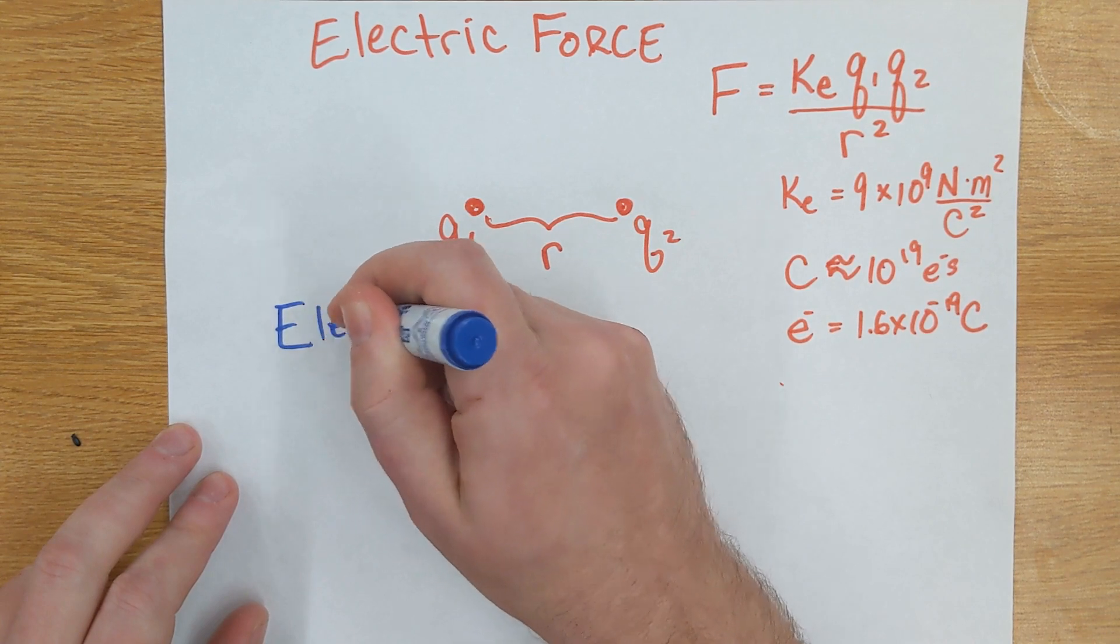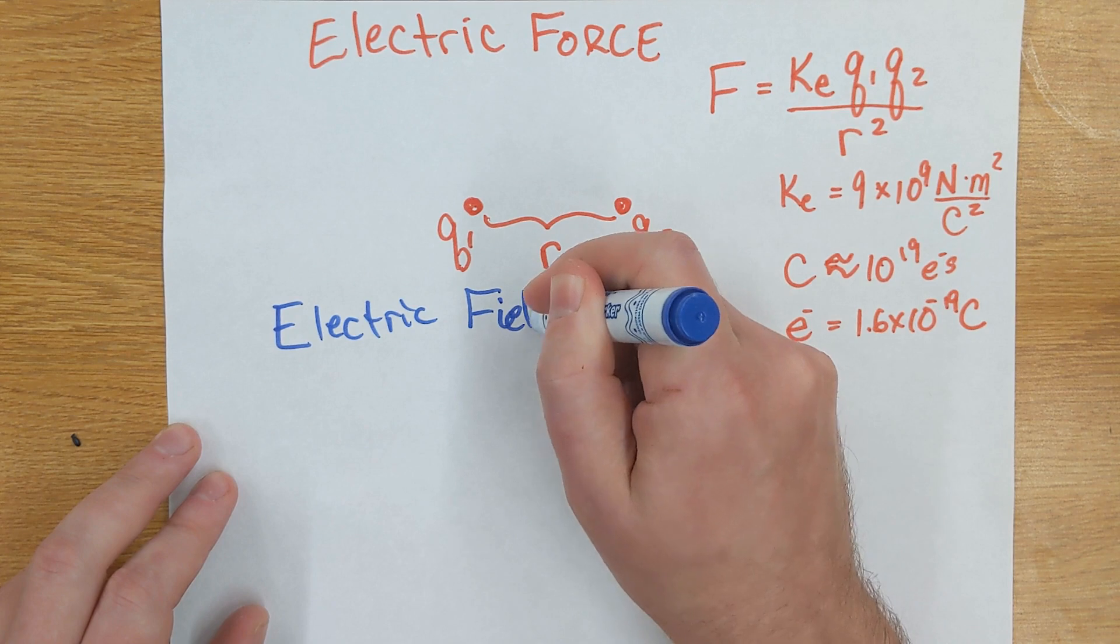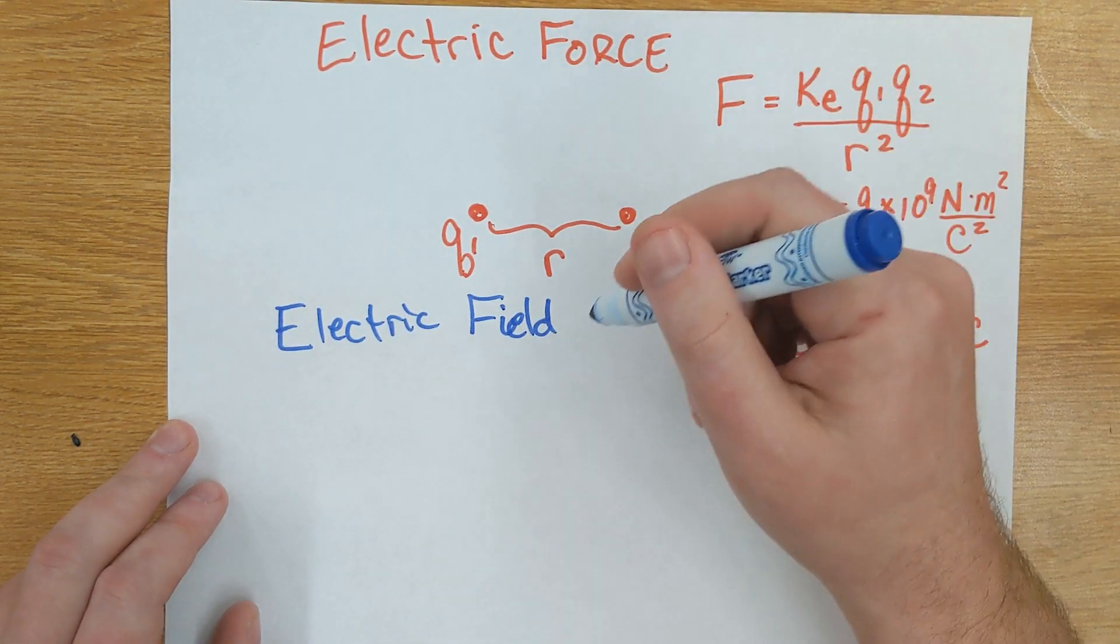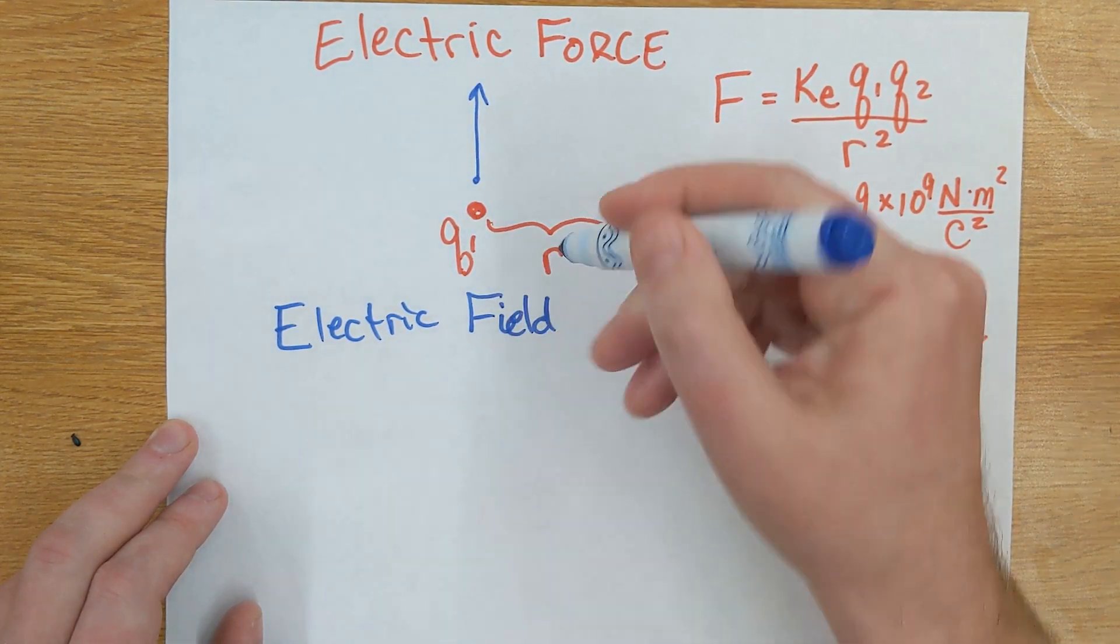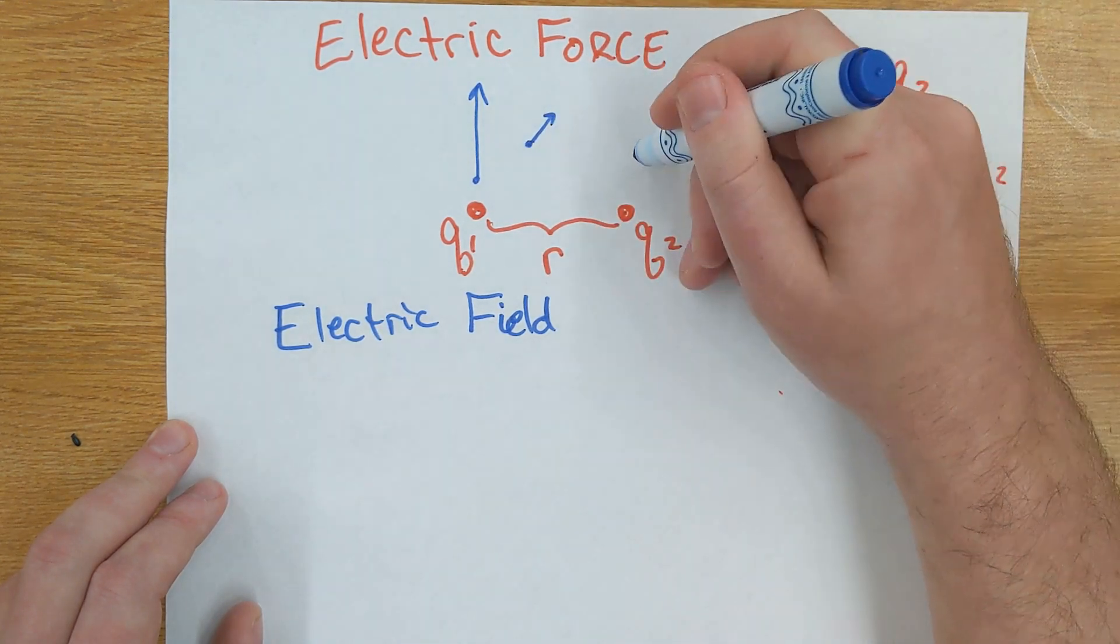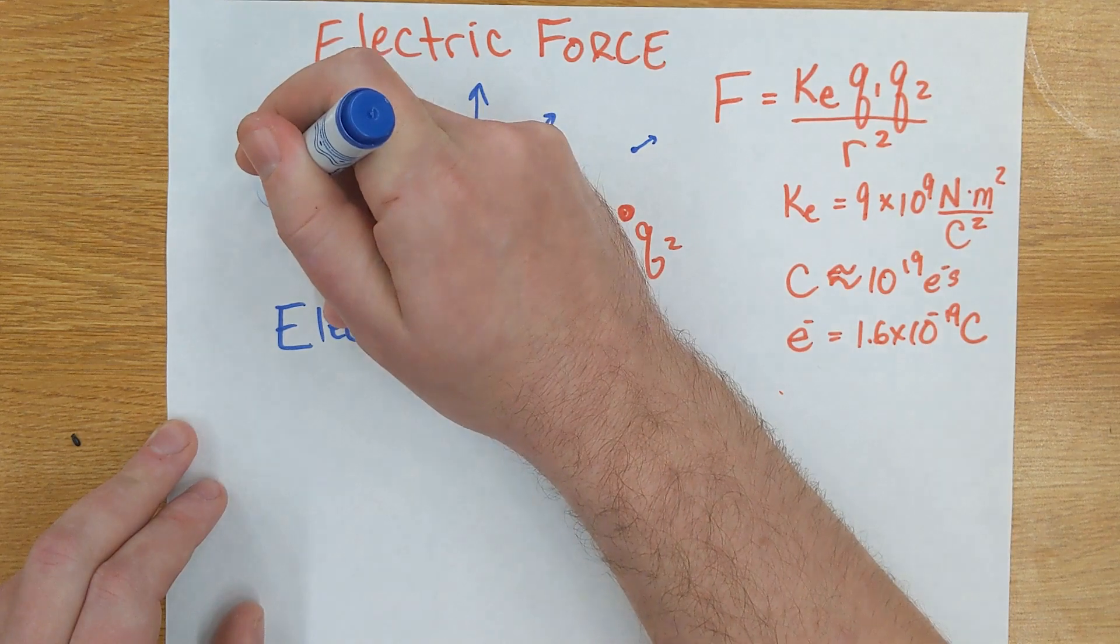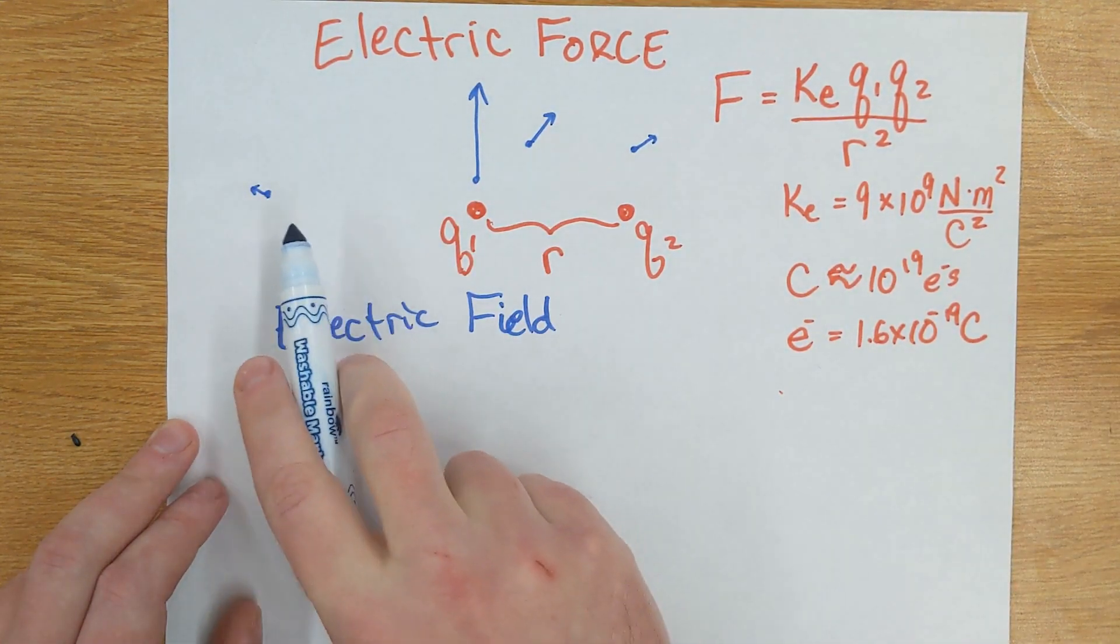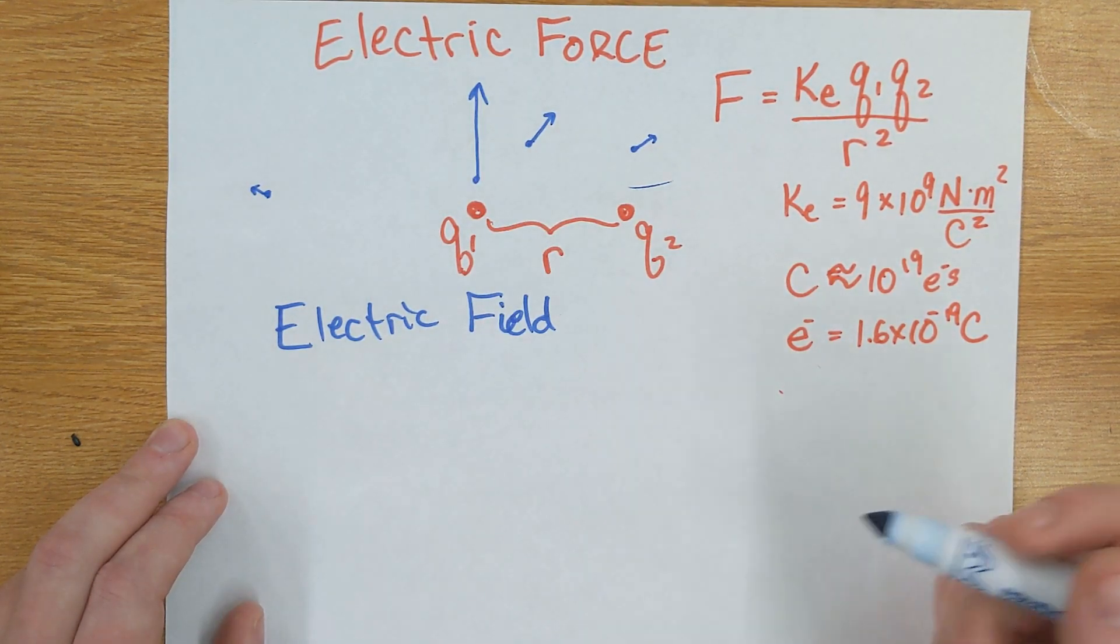The electric field is a function that fills space. So if I wanted to know, what would the electric force be right here? Well, it would be pretty big because I'm close to q1. What if I were over here? It's still pointing away from q1, but it's smaller. And if I were over here, it would be even smaller but still pointing away from q1. Over here, it's even smaller but pointing away from q1. So I see the strength of that force depends on my distance, but it always points away from q1.